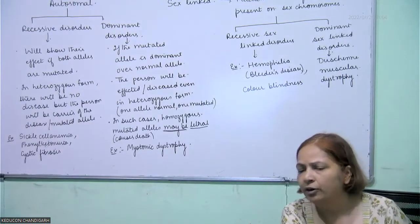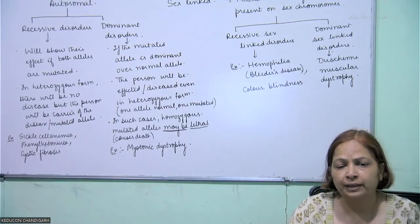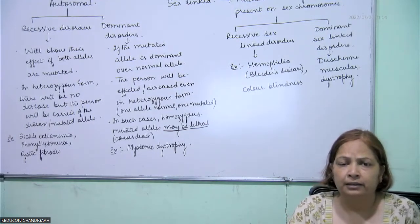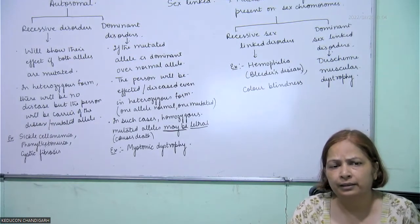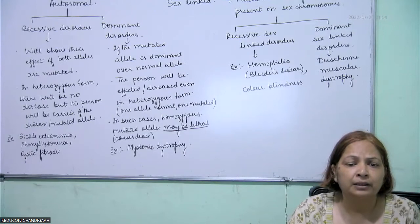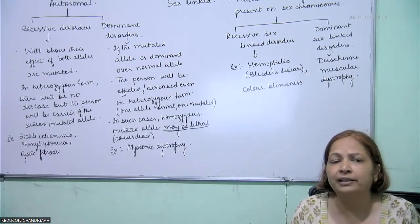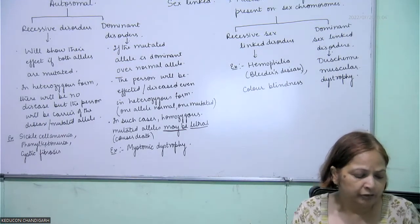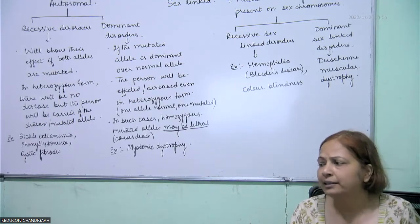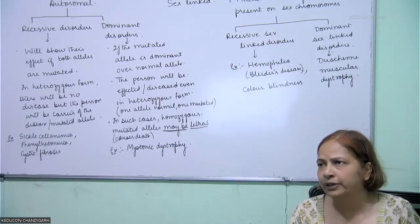Both amino acids — phenylalanine and tyrosine — are affected. As a result, phenylalanine gets accumulated and is converted into phenylpyruvic acid and other derivatives.